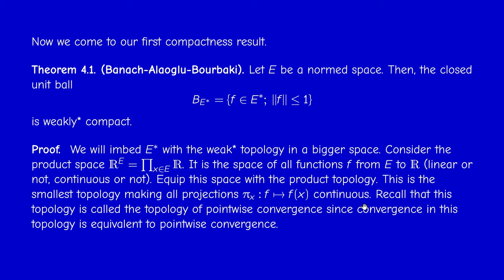By a projection here, I mean π_x, which to each element F in R^E associates its value at the point x — that is, F(x). We denote F as any element in R^E, not just necessarily linear or continuous. I suggest that you go back to the discussion of Chapter 0 in order to follow the proof.